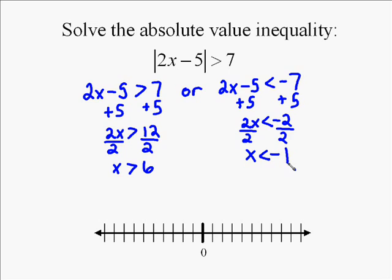Notice since it's an or problem, we're going to go through and just graph the two inequalities separately. So we've got to graph x less than negative 1. It's an open circle. And we're going to shade to the left because x less than negative 1 represents all the numbers less than negative 1. So they're the numbers left of negative 1. Then we're going to graph x greater than 6 and put an open circle and shade to the right.